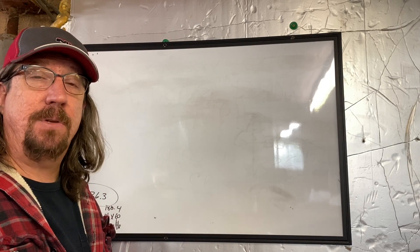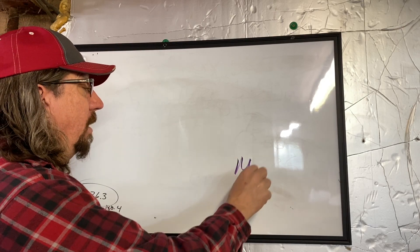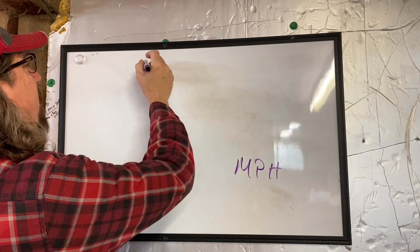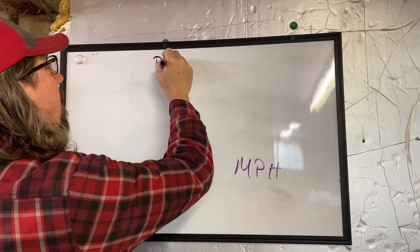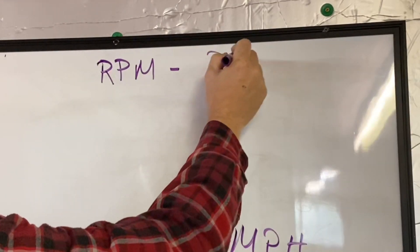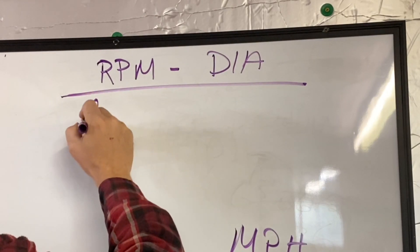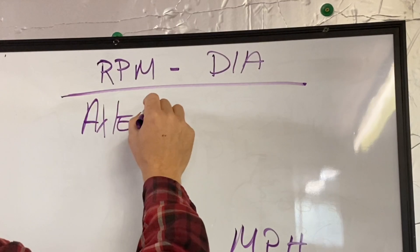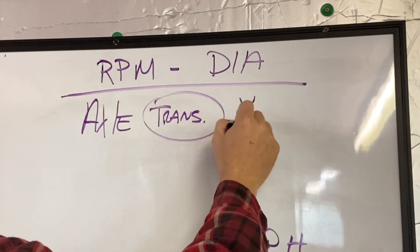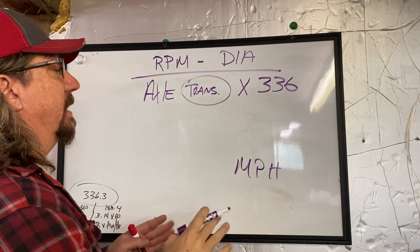I want to show you how to determine miles per hour on your car based on a couple of factors. First, it's going to be based on RPM — how many RPM your engine is turning. It's going to be based on the diameter of your tires, and underneath that, your axle ratio. You can bring your transmission in if you want — we'll talk about that briefly. And then there's a factor called 336, which I'll show you where it comes from.